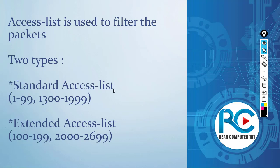To specify whether it's standard or extended, we use the ID number range. If you use the range from 1 to 99 or 1300 to 1999, it's a standard access list. If you use 100 to 199 or the extended range, it's an extended access list.